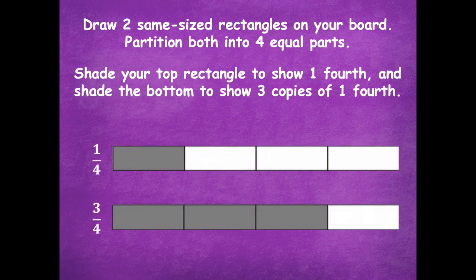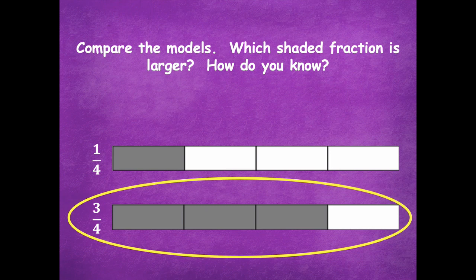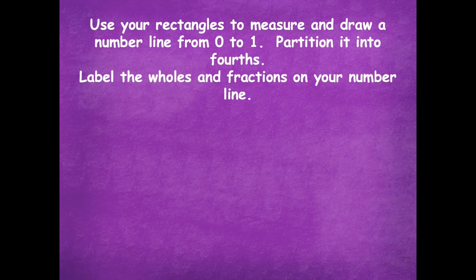All right, here are my two rectangles. They are partitioned into fourths. The first one is shaded as one-fourth, and the bottom is three copies of one-fourth, which is also known as three-fourths. Now compare the models: which shaded fraction is larger and how do you know? Three-fourths is larger, because three parts — three copies of one-fourth — is greater than one copy of one-fourth.